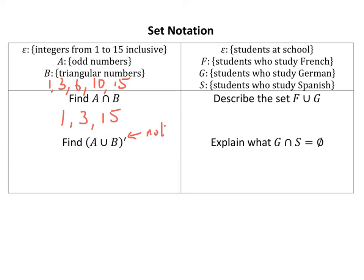So anything that is not odd or triangular. We get 2, 4, 6 is triangular, 8, 10 is triangular, 12, 14. Nice and straightforward first of all.